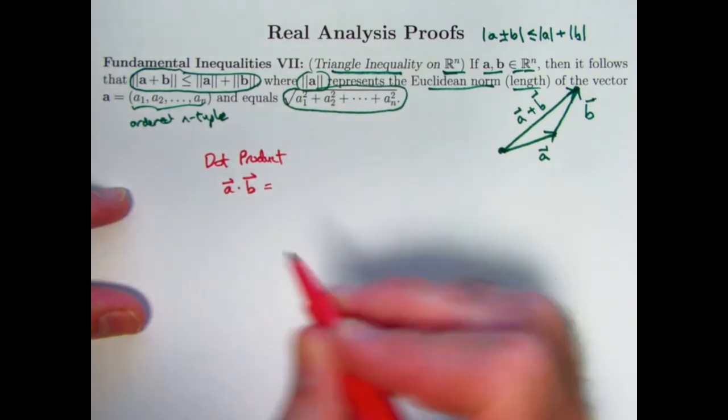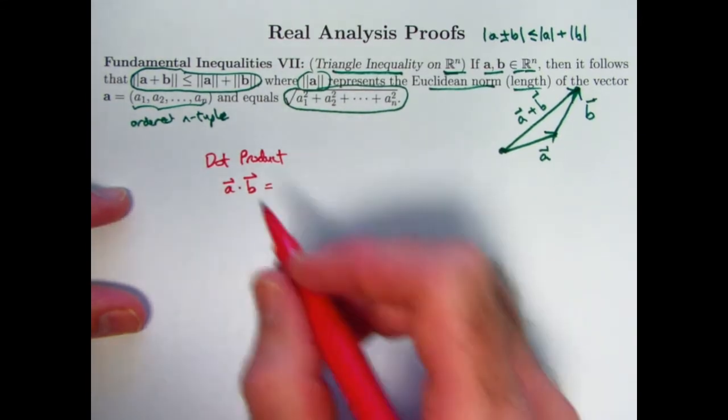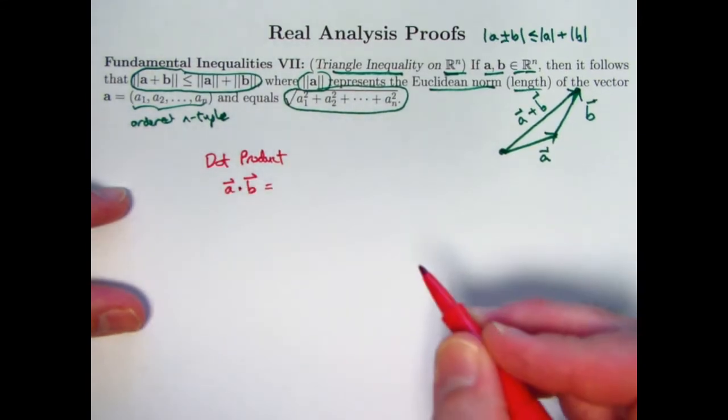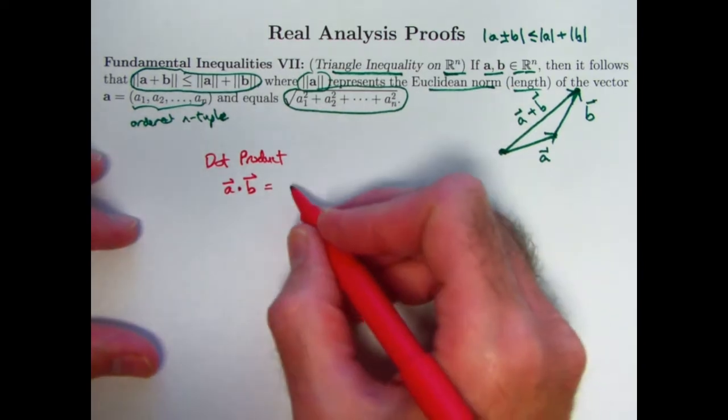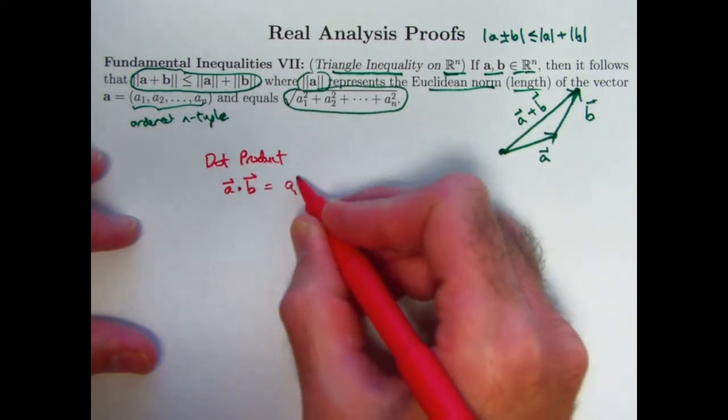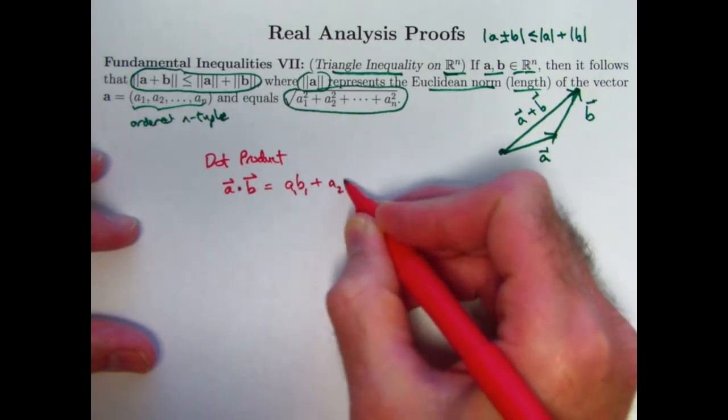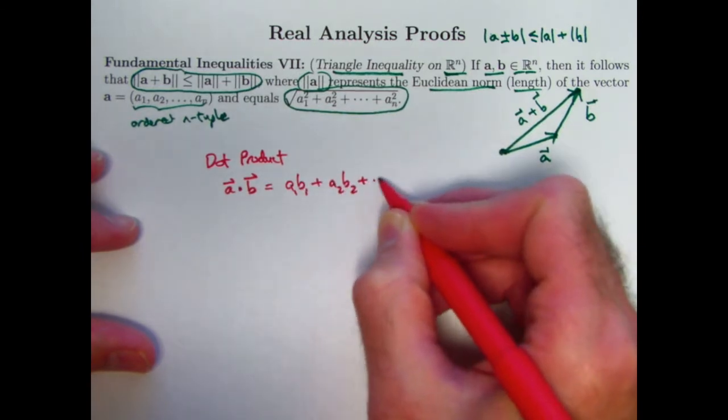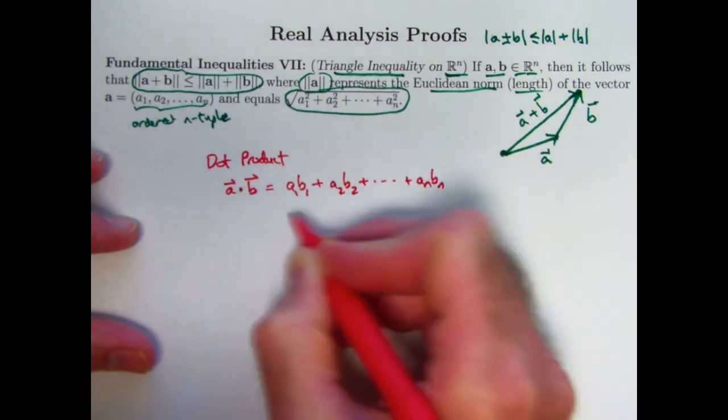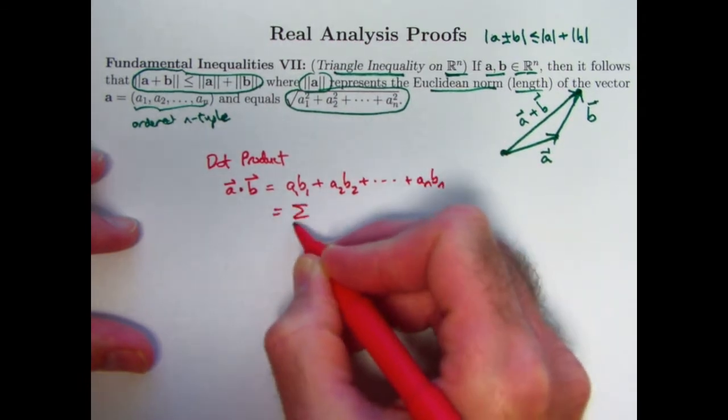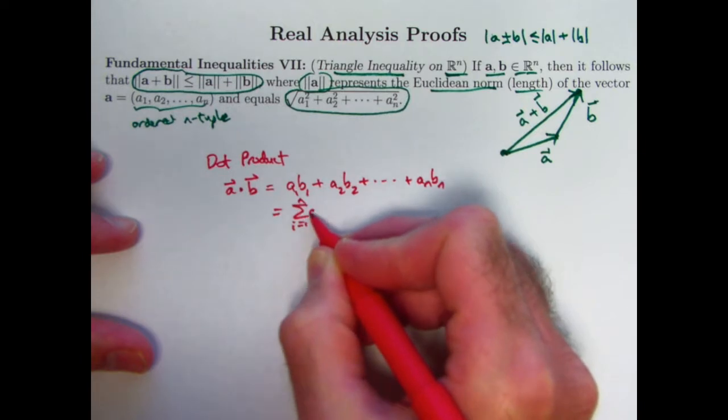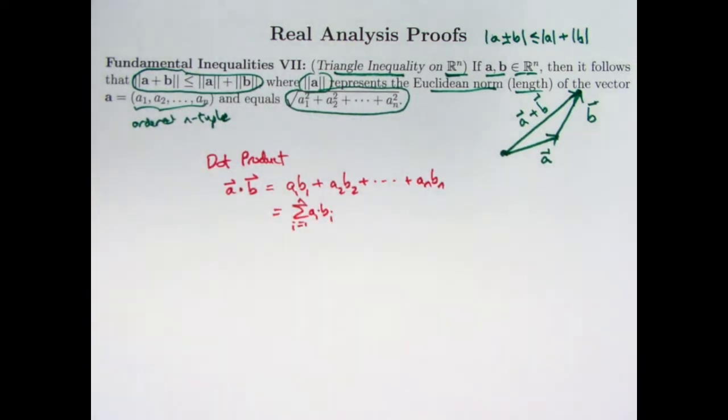a dot b, and you should say the word dot, don't say times, and you should put a dot there, don't put a and b next to each other without a dot, equals the sum of the products of the corresponding components or coordinates of a and b. You can write this in summation notation like this. And this is related to the inequality that we saw in the last video, video number eight, fundamental inequalities six, on the Cauchy-Schwartz inequality. That's going to be related to this expression that you see here.